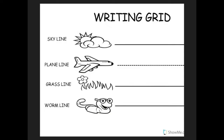T. T is a skyline letter. Put your pencil on the skyline, pull down to the grass line. Stop, pick up your pencil, put it on the plain line, and fly forward for a half space. T, top, t. U. U is a plain line round letter. Put your pencil on the plain line, pull down to the grass line, curve up to the plain line, and pull straight down. U, up, uh.